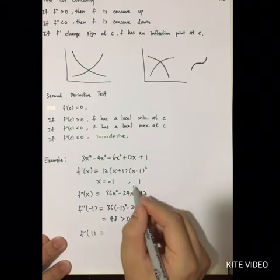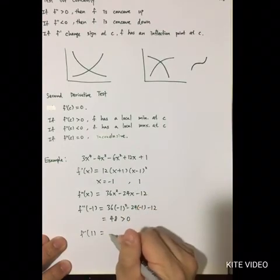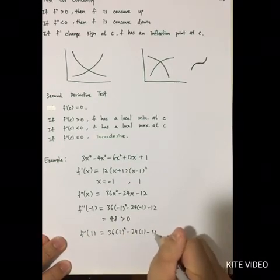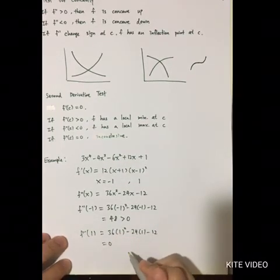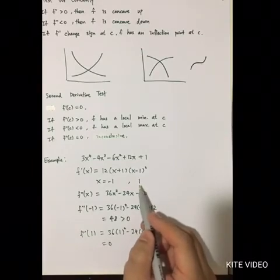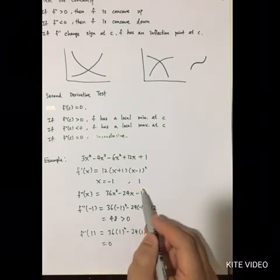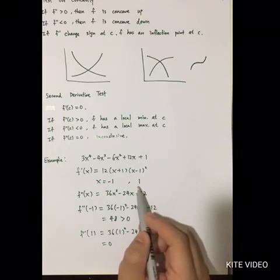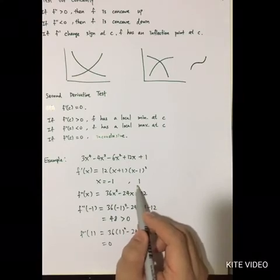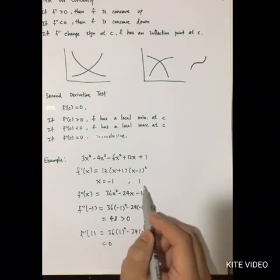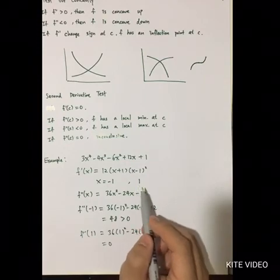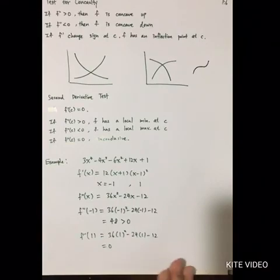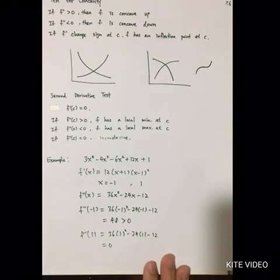Checking the second critical point x = 1, we find that f double prime(1) equals zero. This means we cannot determine whether it is a maximum or minimum from the second order condition alone. Therefore, you have to draw the graph or check the first order condition before and after x = 1 to determine whether it is a maximum, minimum, or inflection point.